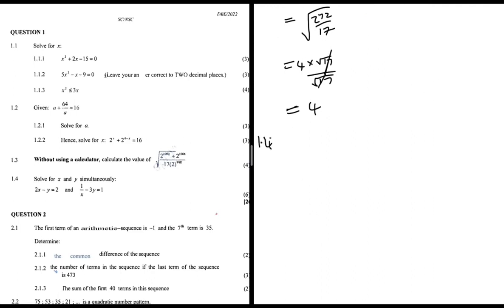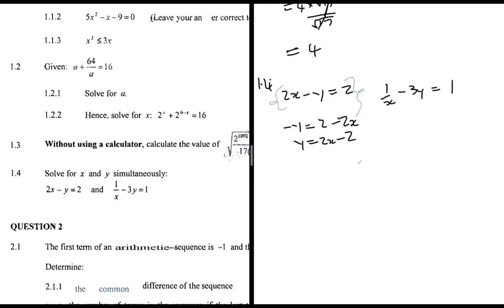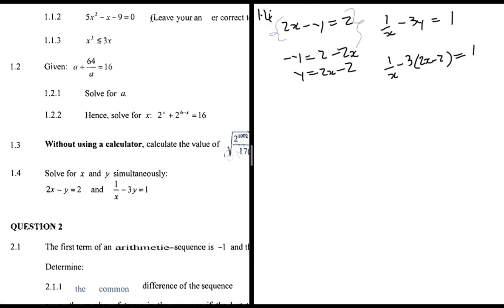For 1.4, solve simultaneously: 2x - y = 2 and 1/x - 3y = 1. From the simpler equation, -y = 2 - 2x so y = 2x - 2. Substituting into the second equation: 1/x - 3(2x - 2) = 1, giving 1/x - 6x + 6 = 1.